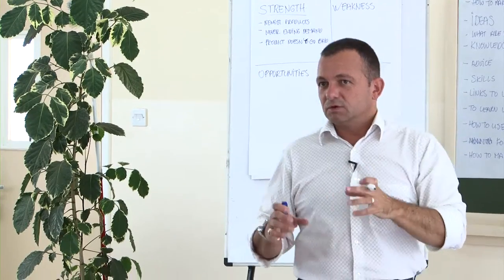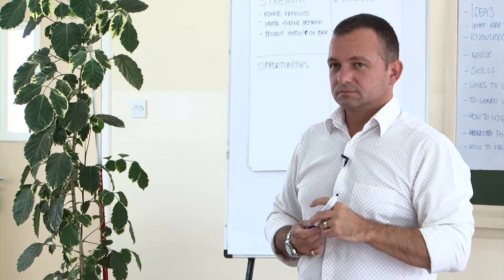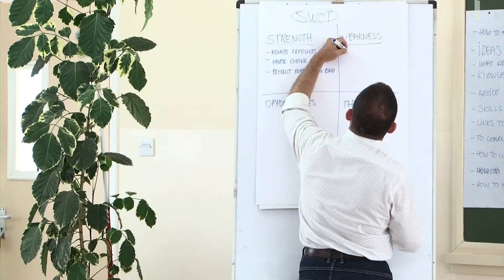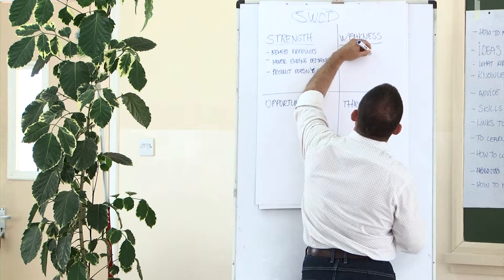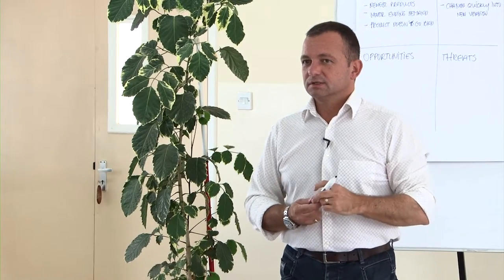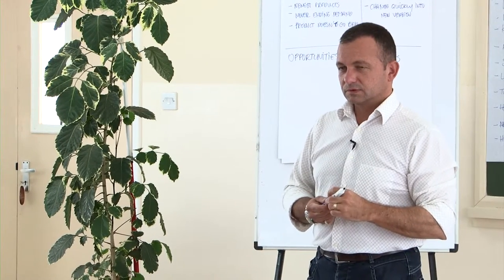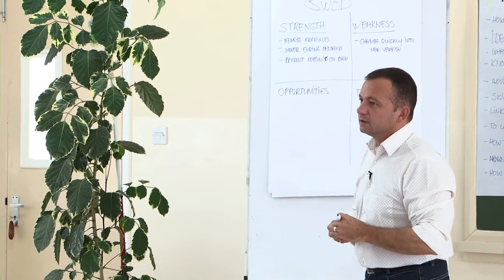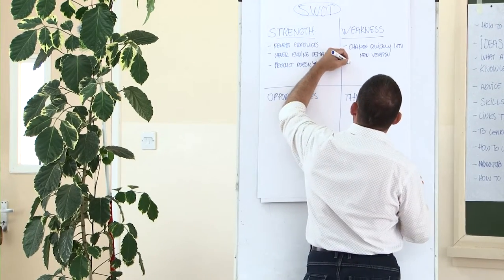Now, let's take the same example — what would be a weakness? The books change quickly into a new version, right? A reprint, another one, and another one. What could be another weakness? Duncan: unlimited capital. Yes, unlimited capital — meaning you need a lot of capital.